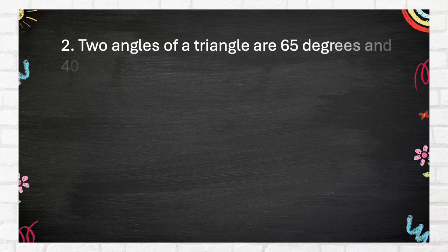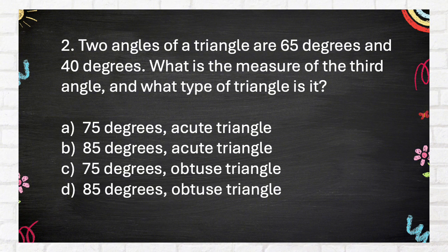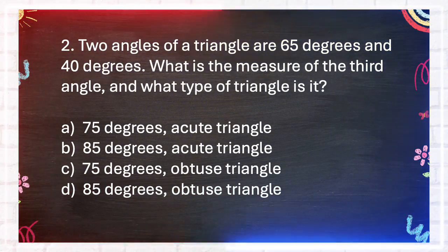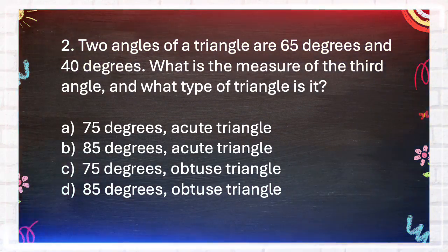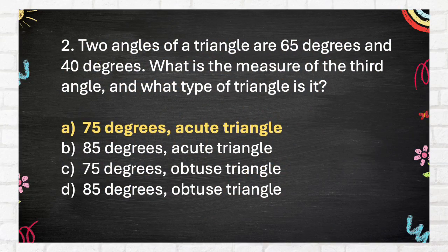Question number 2. Two angles of a triangle are 65 degrees and 40 degrees. What is the measure of the third angle, and what type of triangle is it? A. 75 degrees, Acute triangle, B. 85 degrees, Acute triangle, C. 75 degrees, Obtuse triangle, D. 85 degrees, Obtuse triangle. The answer is A. 75 degrees, Acute triangle.